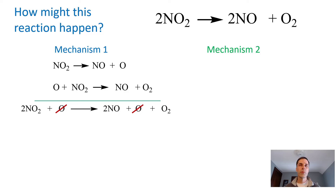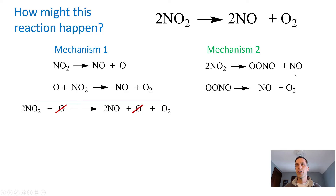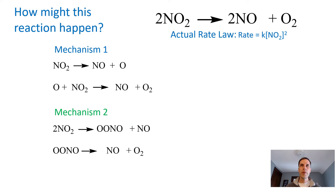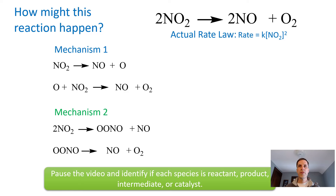Mechanism two has two molecules of NO2 reacting to form NO and a species called OONO — that's two oxygens attached to each other then attached to nitrogen and oxygen, not NO3. Adding those steps and canceling the OONO intermediate gives the same overall reaction, so this is also a viable mechanism. Pause the video and identify whether each species — NO2, NO, O2, O, and OONO — is a reactant, product, intermediate, or catalyst. Answer on D2L.